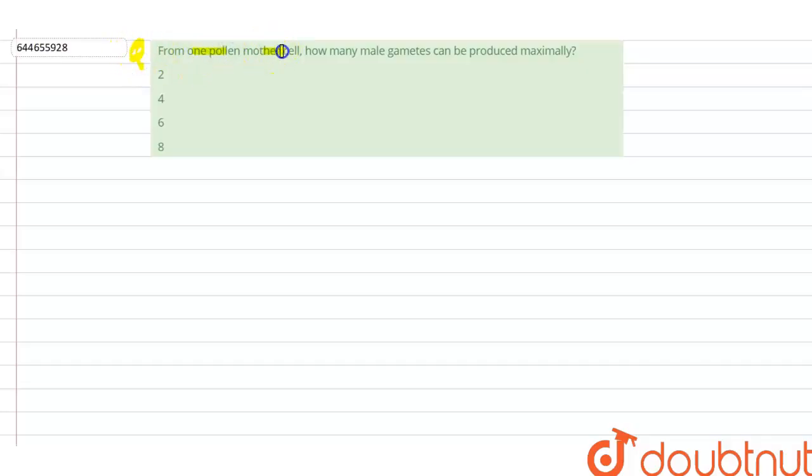...is from one pollen mother cell, how many male gametes can be produced maximally? So the options are two, four, six and eight. These are the options with us, but before that we should know what are these male gametes.